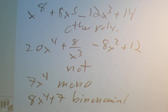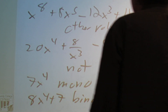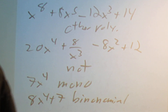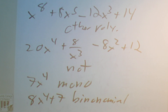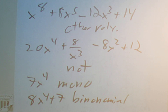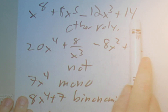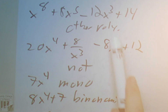Hello class, here's the next part of the test to review. Your question is going to give you a bunch of what looks like polynomials and you have to say whether it's a monomial, binomial, trinomial, other polynomial, or not a polynomial at all. So this first one we have one, two, three, four terms, so it's going to be another polynomial.